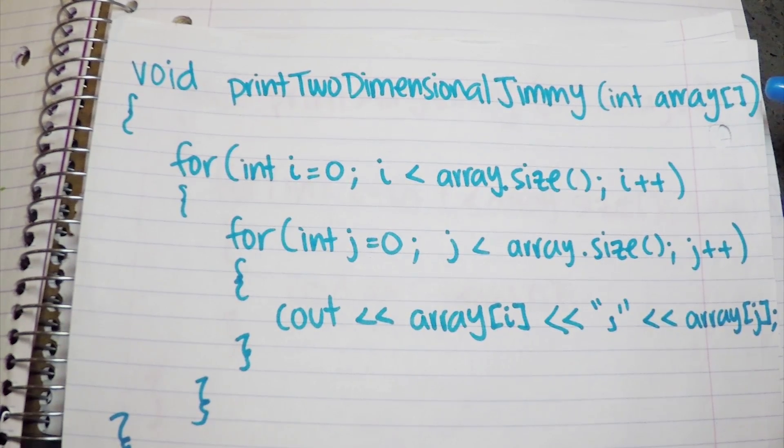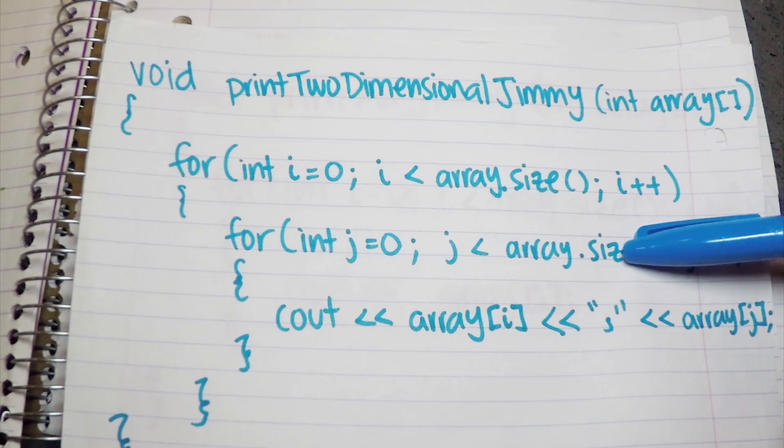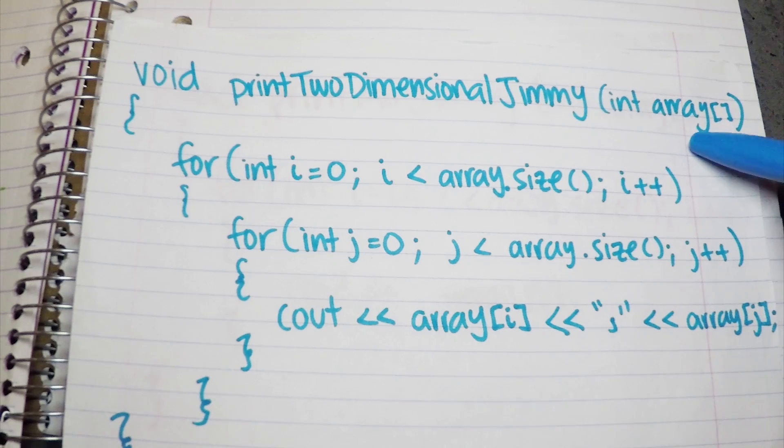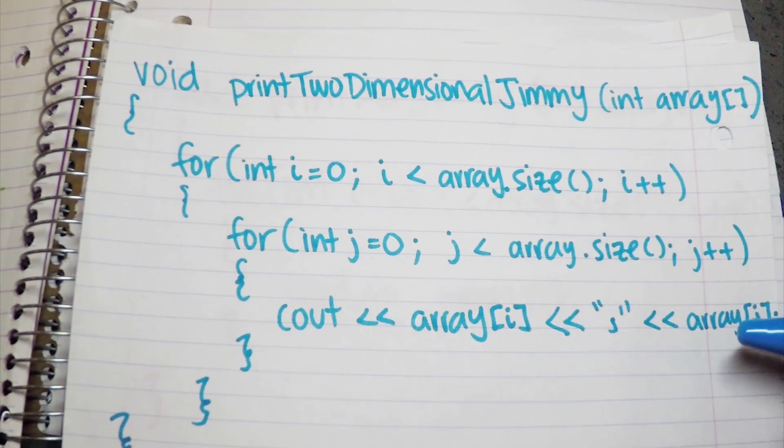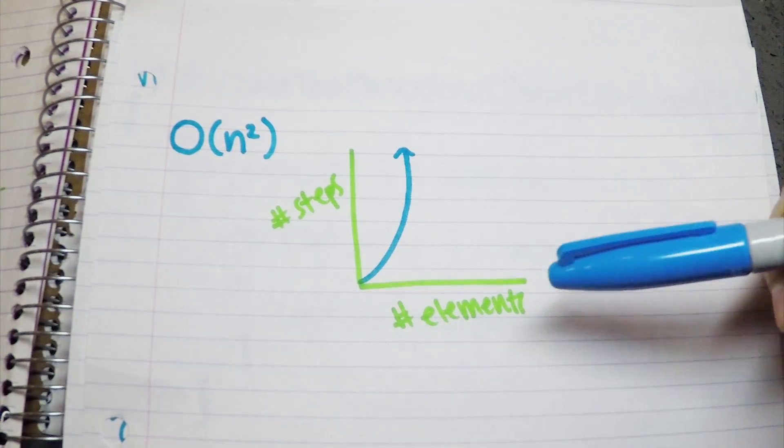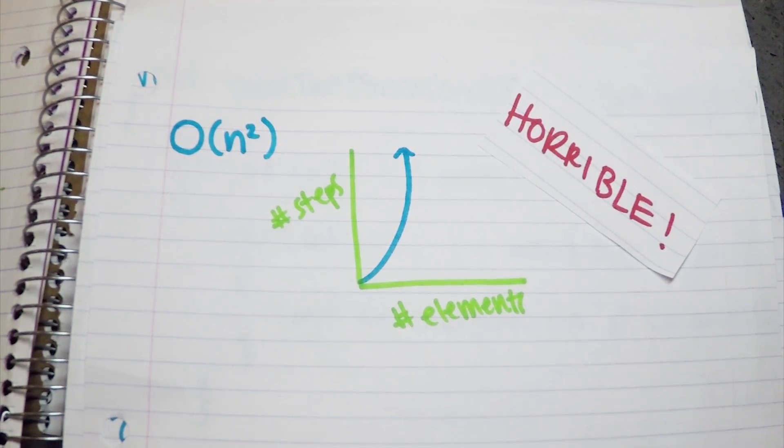In this function, we pass an array and then we loop through the array n number of times, and then again n number of times. This is a nested loop, which means if I have 1,000 elements in my array, I'm going to run this one line of code a million times. This will make our instructions or steps increase exponentially as our input increases, giving us a complexity of O(n²), where our number of steps increase exponentially as our number of elements increase. This is actually a really bad case of the big O.